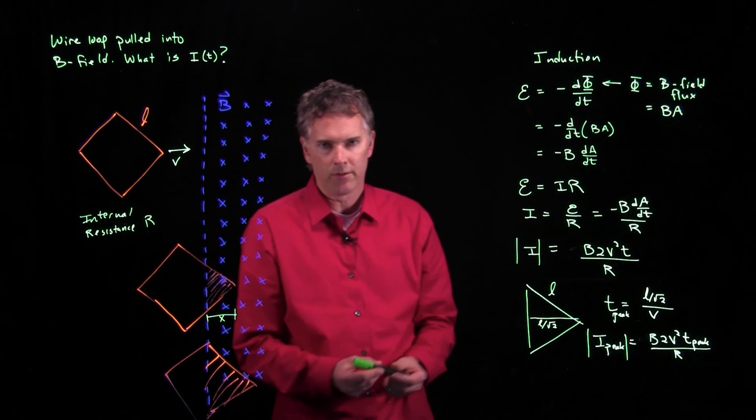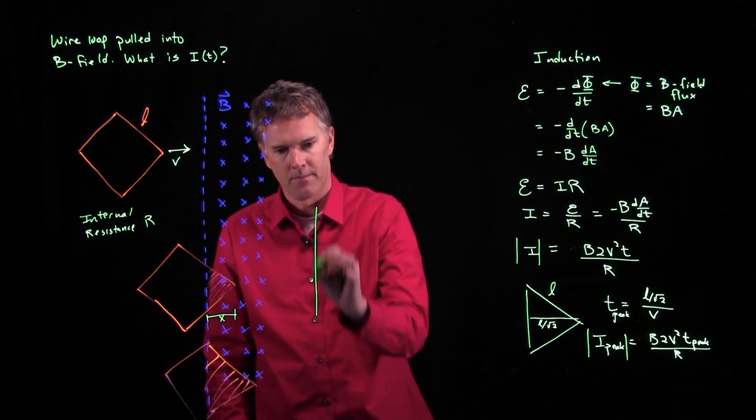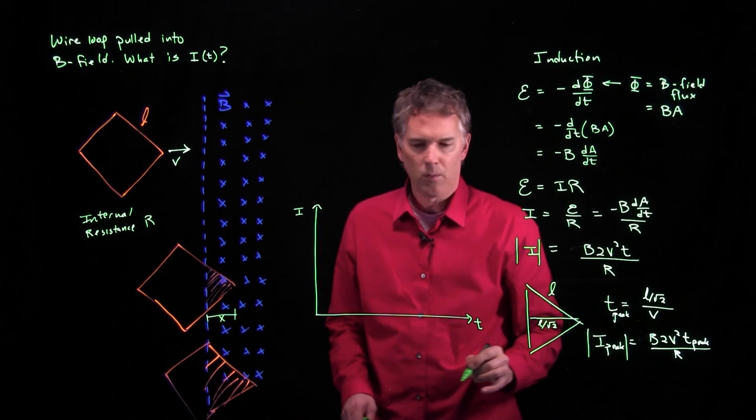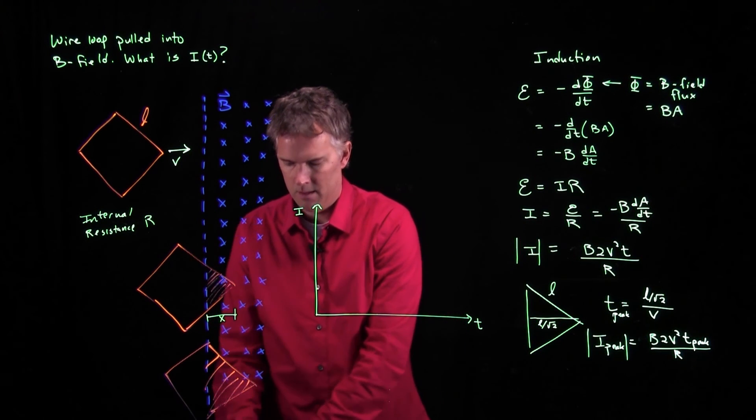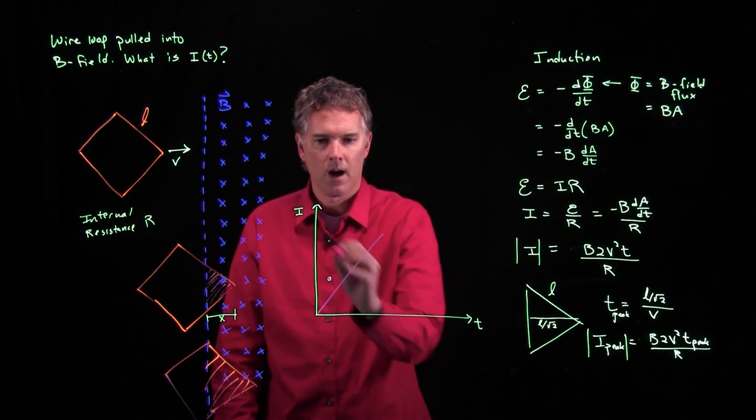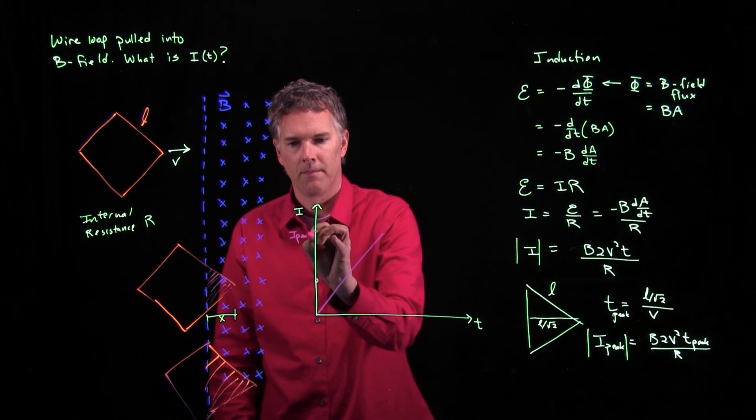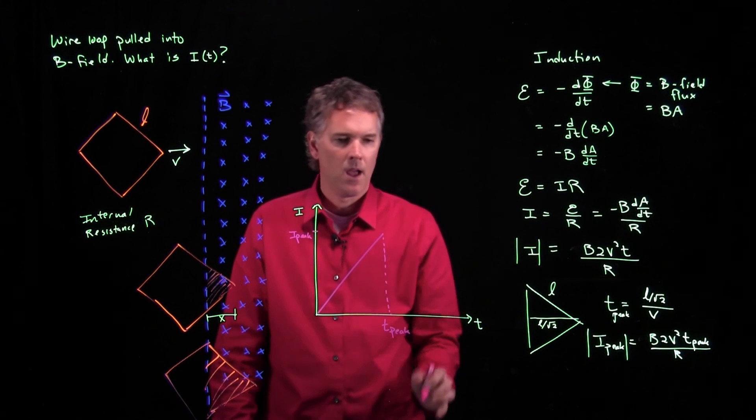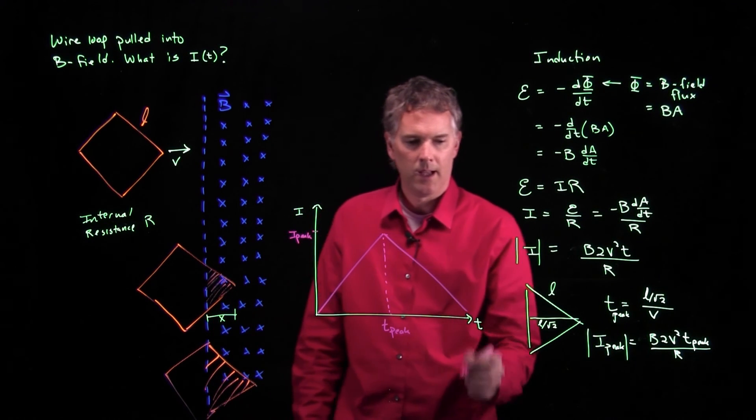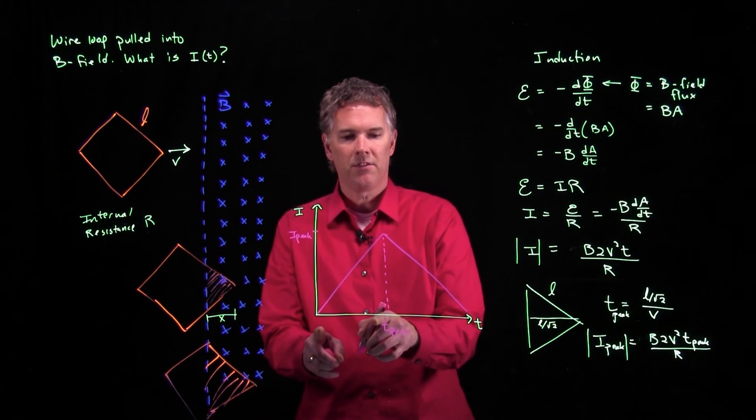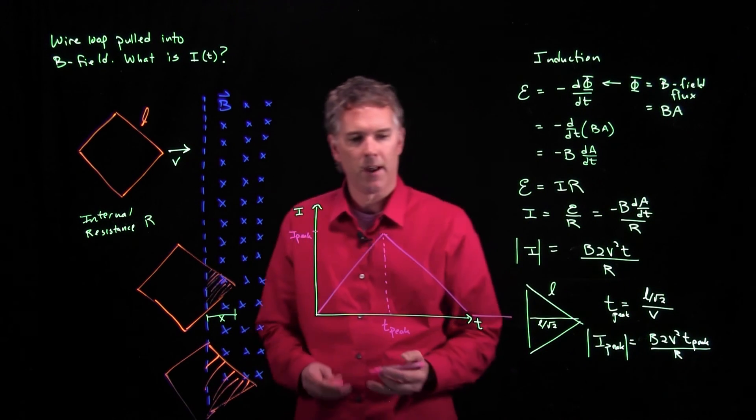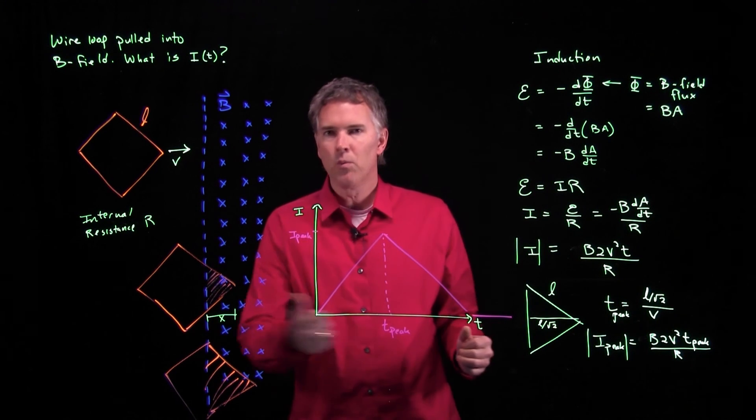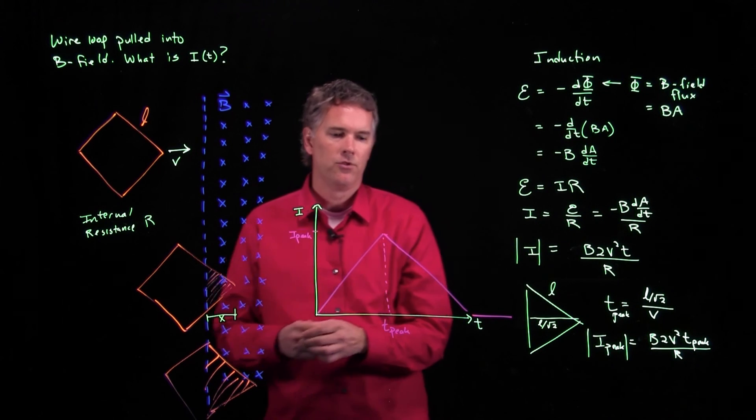Here's I. Here is T. And what does it look like? Well, it goes up until it hits I peak, and that happens at a time T peak. And then it goes down linearly until it comes back down to zero in the same amount of time. And then it's zero from there on out. So that's what your curve looks like as a function of time. You know it has to be symmetric about T peak, because if you ran the whole thing in reverse, it should go up and then down just like this behavior.